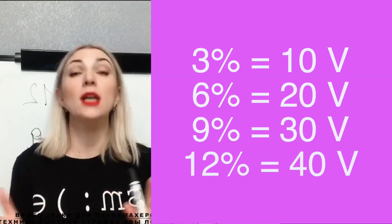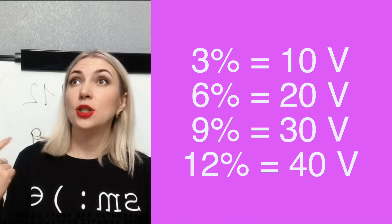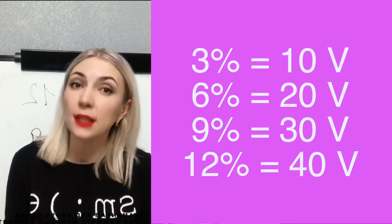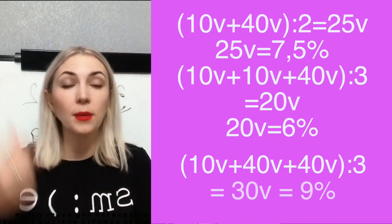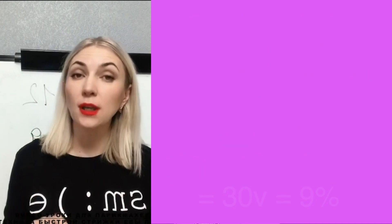In the American market, oxides are most often not in percentages but in volumes. They are harder to count, but I will show you a table by which you can easily calculate everything. The principle is the same — just in different units. So you can get intermediate oxides as well as 20 and 30 volumes if you have 10 and 40 volumes available.